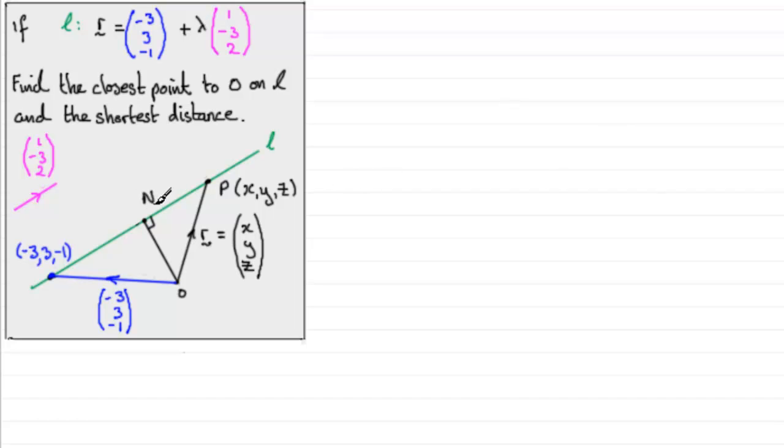the corresponding value of lambda would have to be. So let's say that N has coordinates, say, x1, y1, z1. Let's just mark that in there. So this vector ON would be a column vector x1, y1, z1. I haven't really got much room to write that in there, but hopefully you've got that idea.